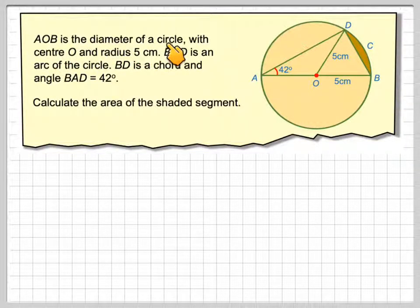AOB is the diameter of a circle with centre O and radius 5, that means the diameter is 10.